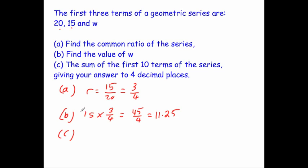Part C says find the sum of the first 10 terms of the series. So we're going to use SN. So SN is equal to A bracket 1 minus R to the N, close brackets, all over 1 minus R.